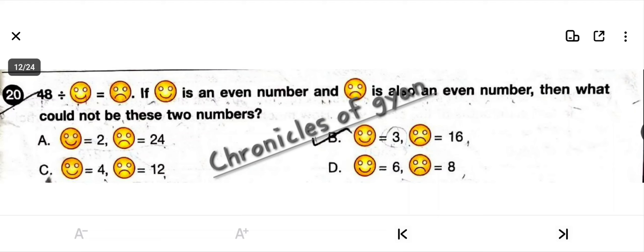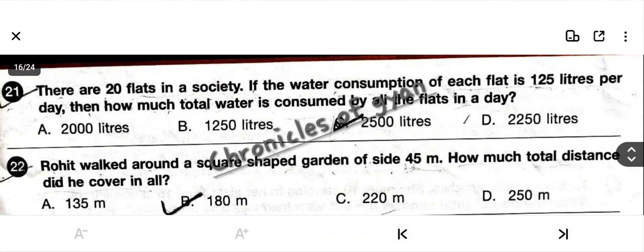Question 20: 48 divided by happy smiley equals sad smiley. If happy smiley is an even number and sad smiley is also an even number, what could NOT be these two numbers? Looking at the options: A has even numbers, C has even numbers, D has even numbers. But option B has 3 and 16 — since 3 is an odd number, this violates the condition. So the answer is option B.